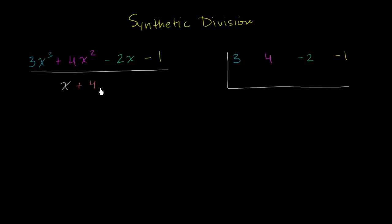And then we look at the denominator. In particular, we're going to look at whatever x plus or minus is right over here. We have a positive 4. Instead of writing a positive 4, we write the negative of that, which would be negative 4. And now we are all set up and we are ready to perform our synthetic division.